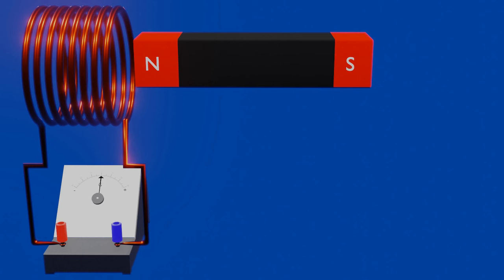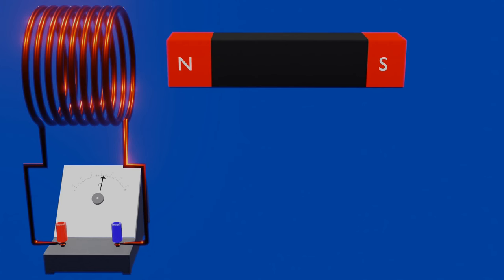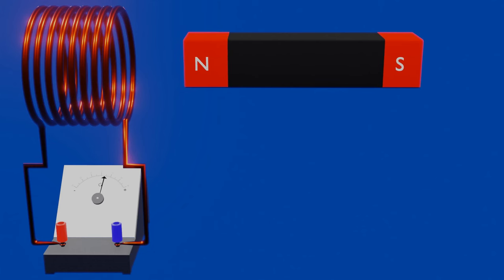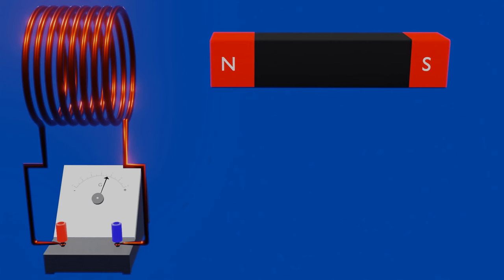Similarly, when we move the bar magnet away from the coil, the same phenomenon occurs. There is an indication of electric current in the coil which can be seen by the needle of the galvanometer. But this time the needle deflects in the opposite direction. And when we stop moving the bar magnet, there is no indication of electric current.